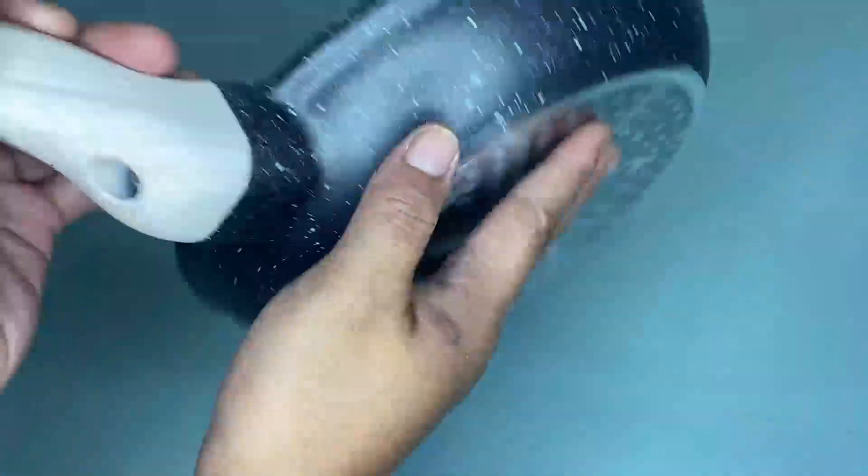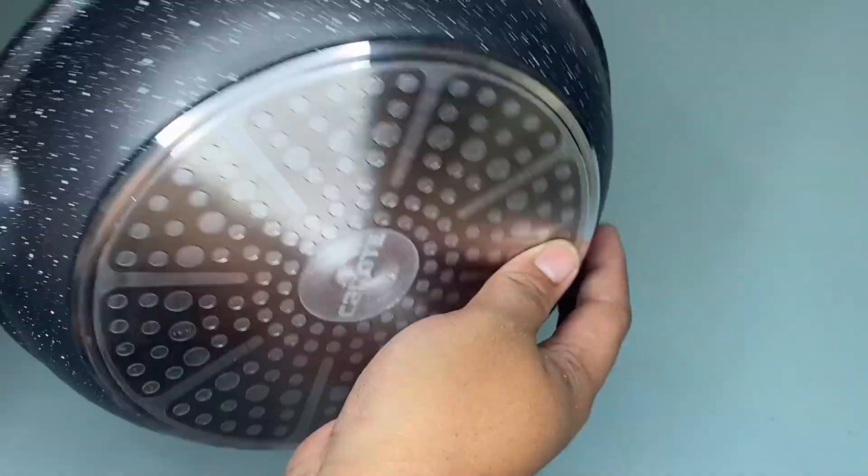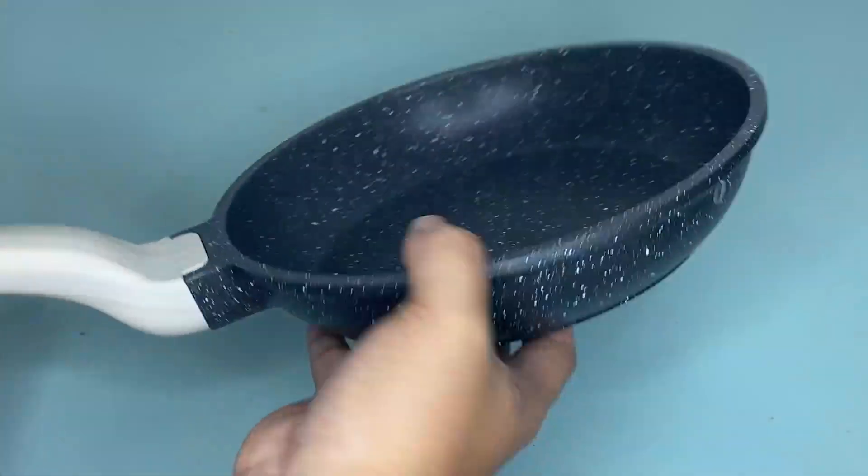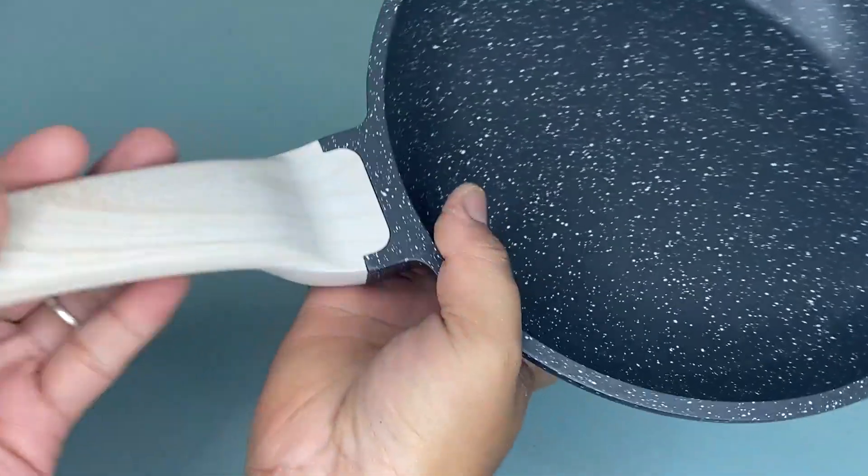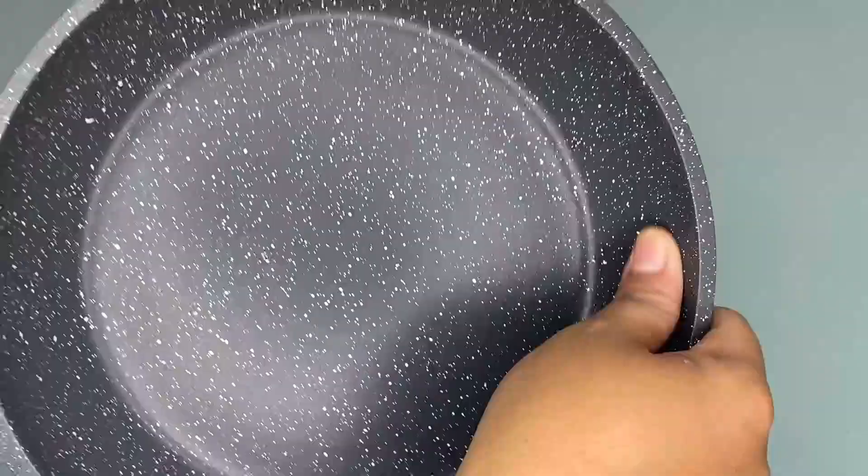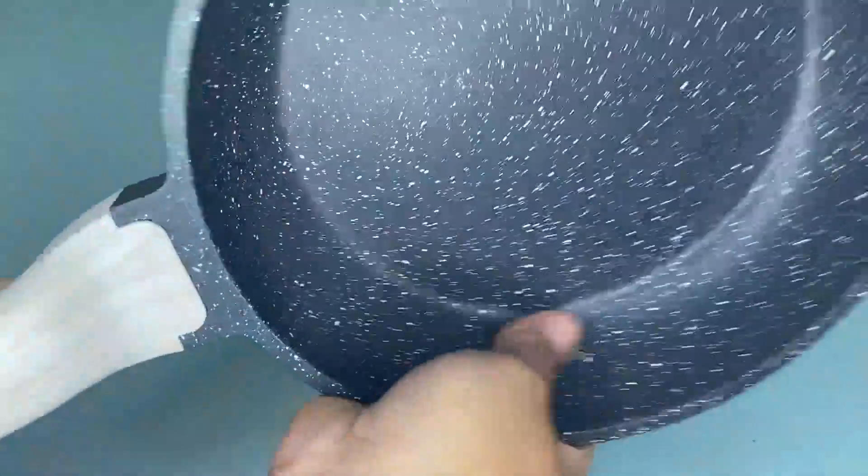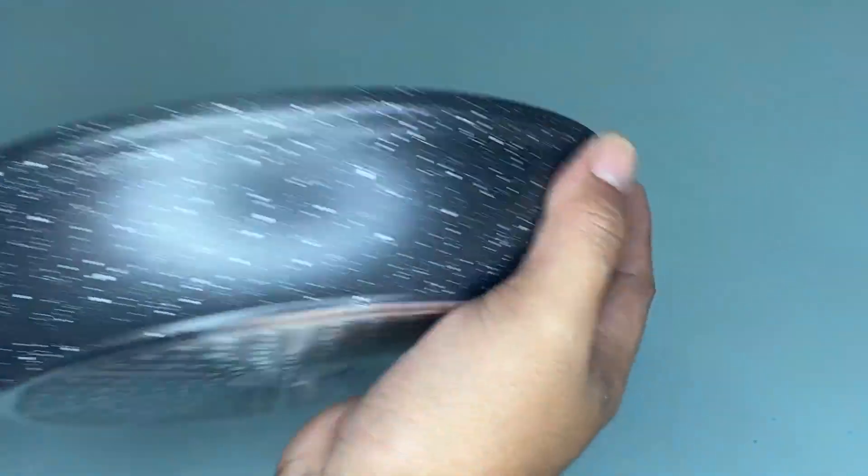This stainless steel base allows non-stick cookware to work on all cooktops including induction. You can easily clean this with a damp cloth or a paper towel or even rinse it with water.